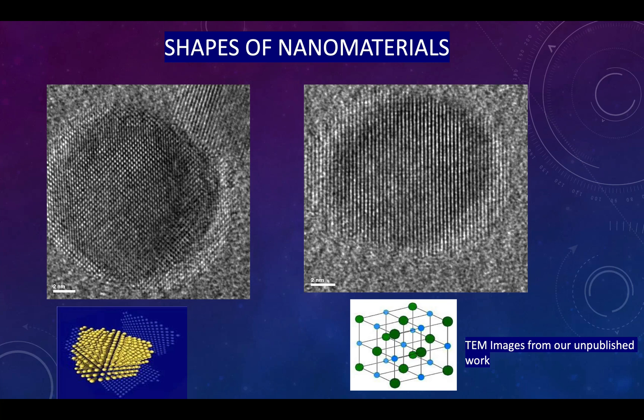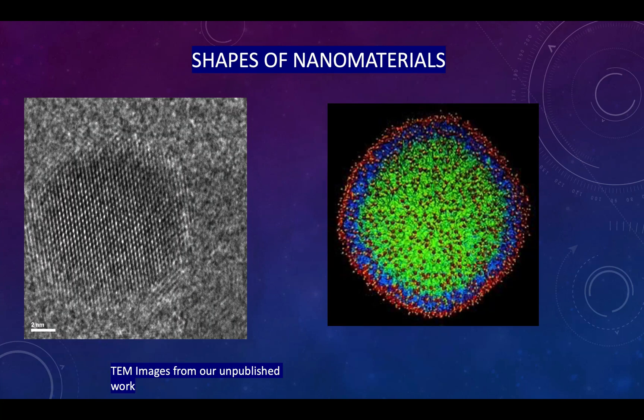This is another shape of nanomaterial — a really high-zoom image, about two nanometers in scale, of lead sulfide. You can clearly see the lattice fringes — very small and a very good image. This high-resolution image is only possible with a high-resolution machine. It clearly shows the lattice planes and other structural details.